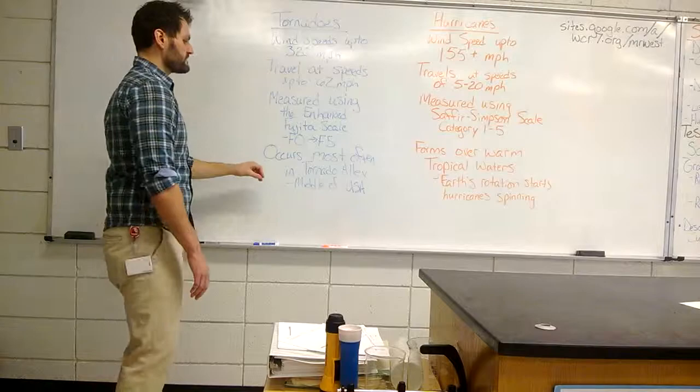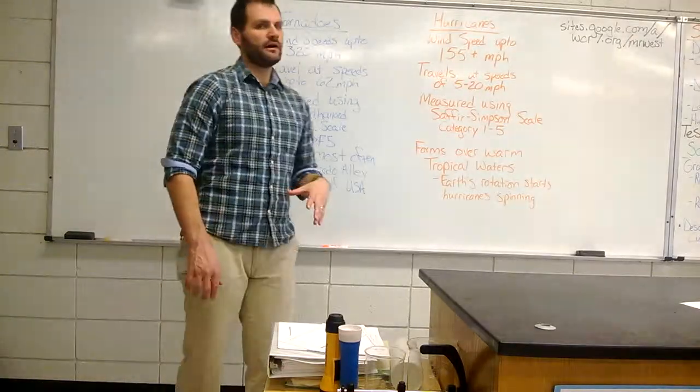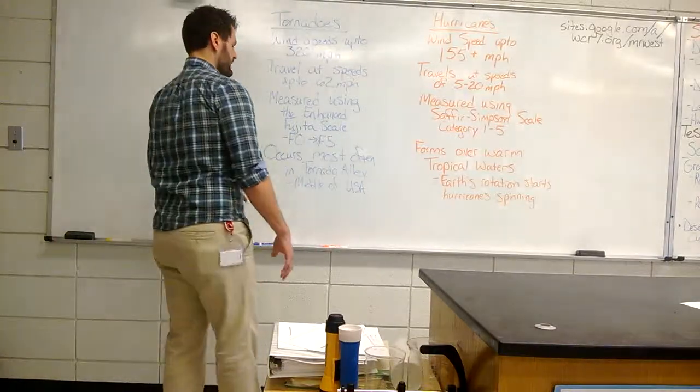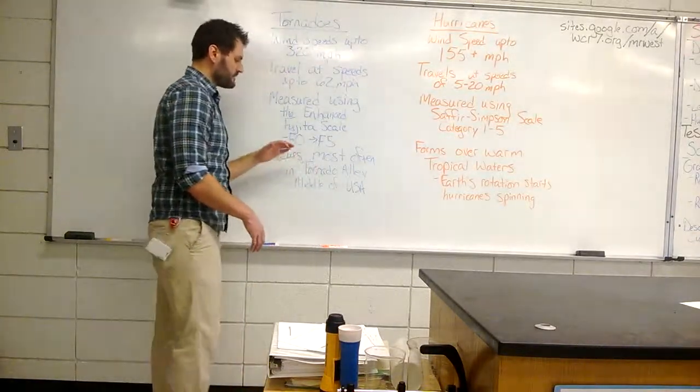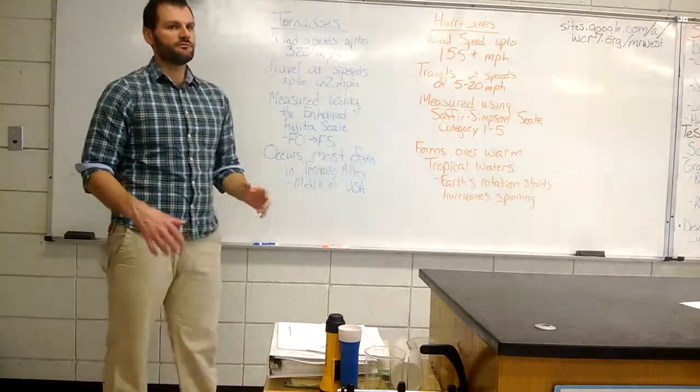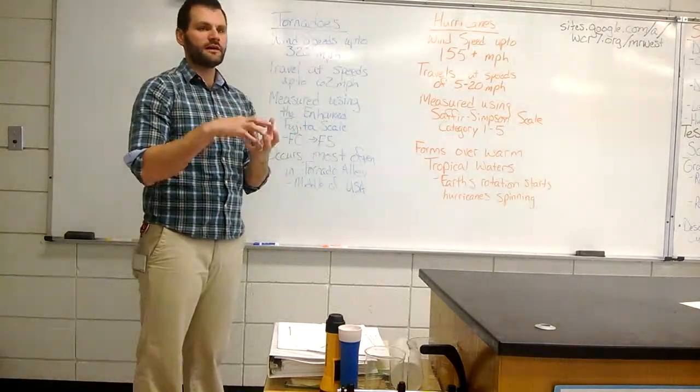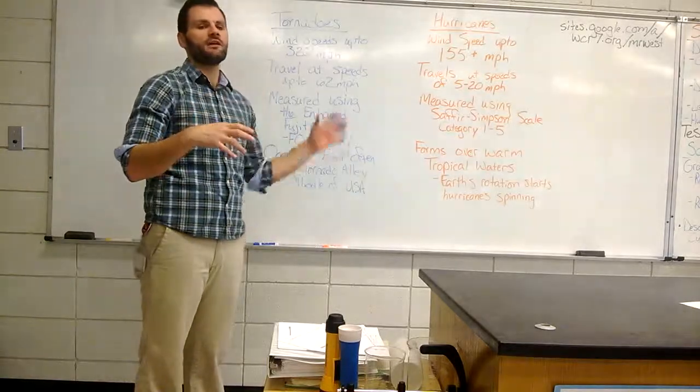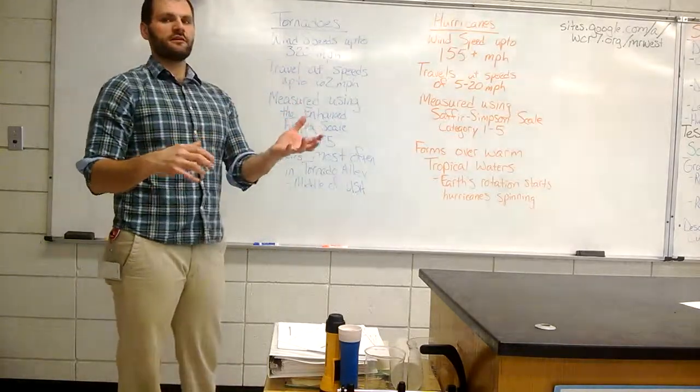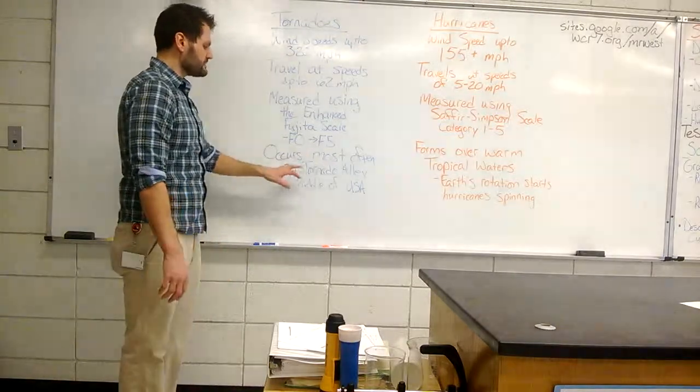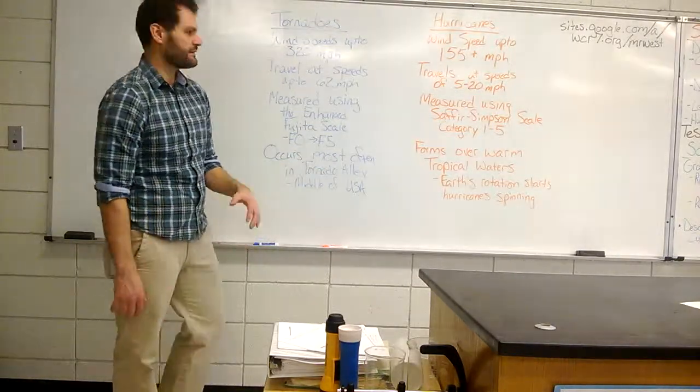Tornadoes occur most often in what we call Tornado Alley, which happens to be this middle part of the United States where we live. It occurs there because this is where we most often get cold air and warm air colliding—cold air coming down from Canada, warm moist air from the Gulf coming up, and they kind of hit each other in this middle part of the United States called Tornado Alley.